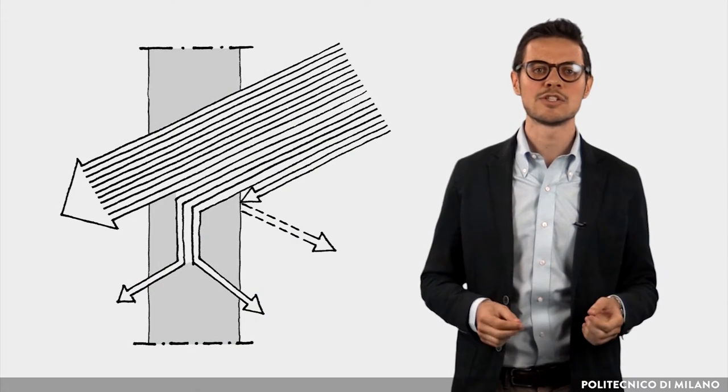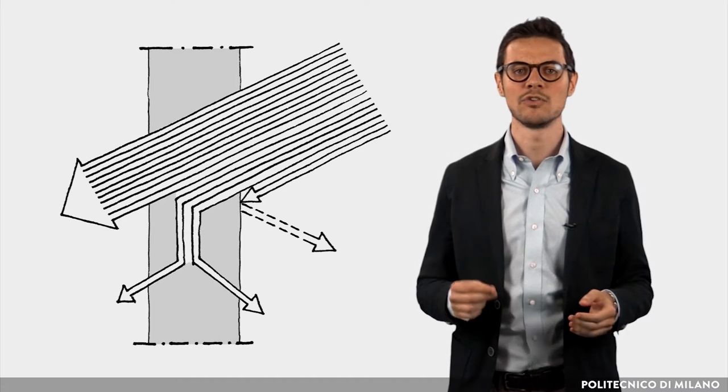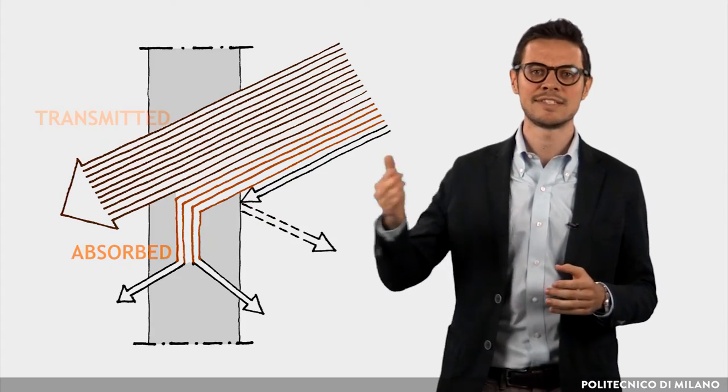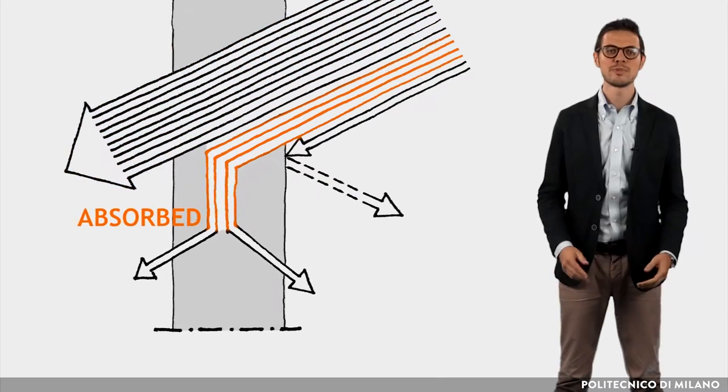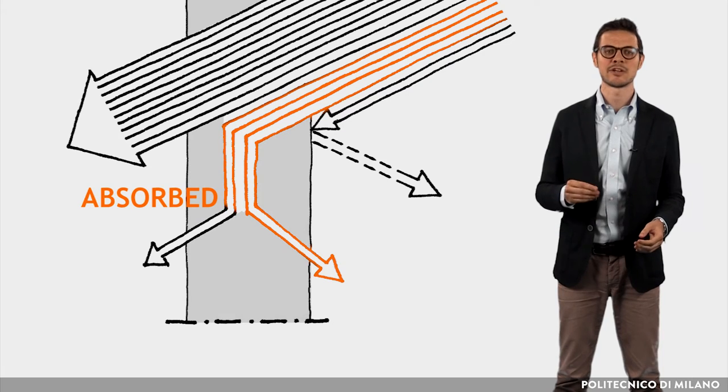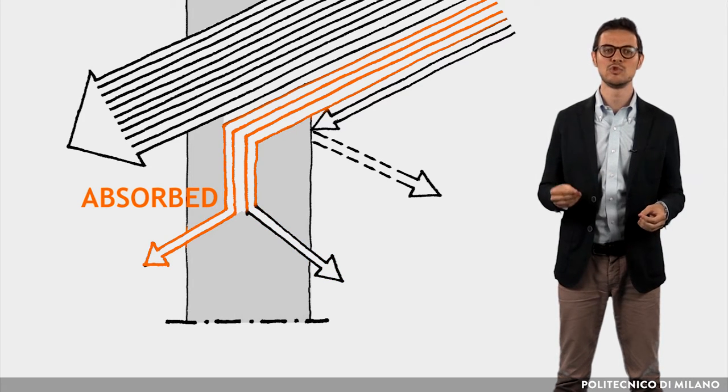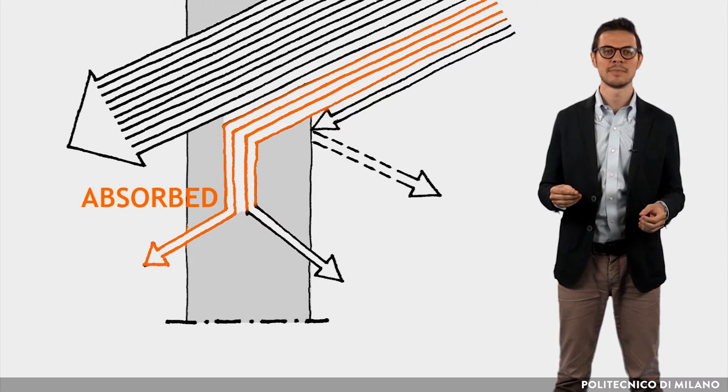More in detail, solar radiation incident on a glass surface is partially reflected, partially absorbed and partially transmitted. Of the absorbed energy, a part returns to the outside and a part is released inside, due to the heating of the glass.